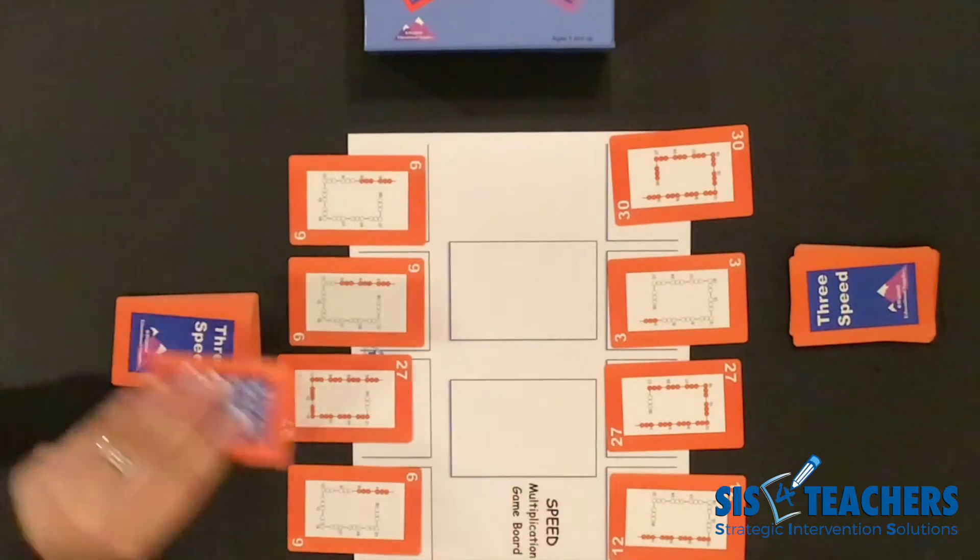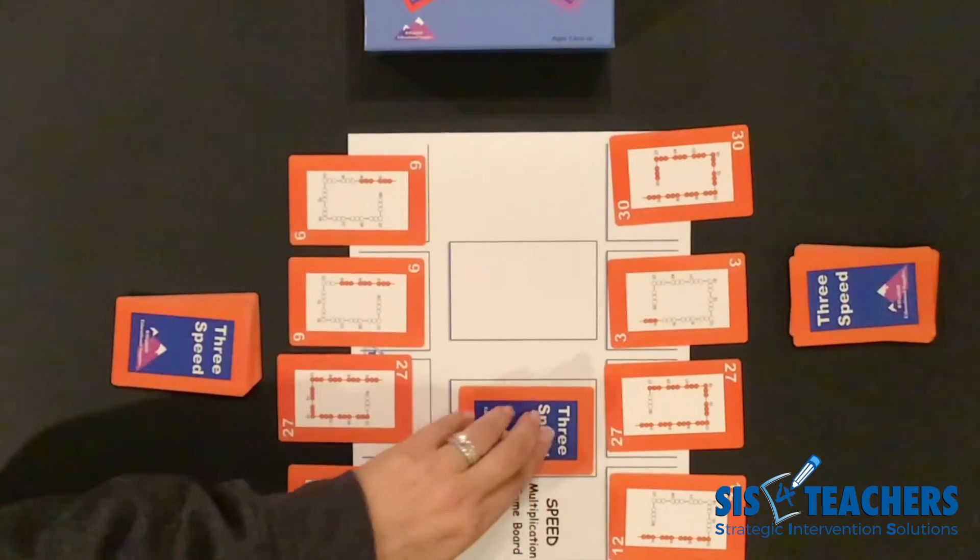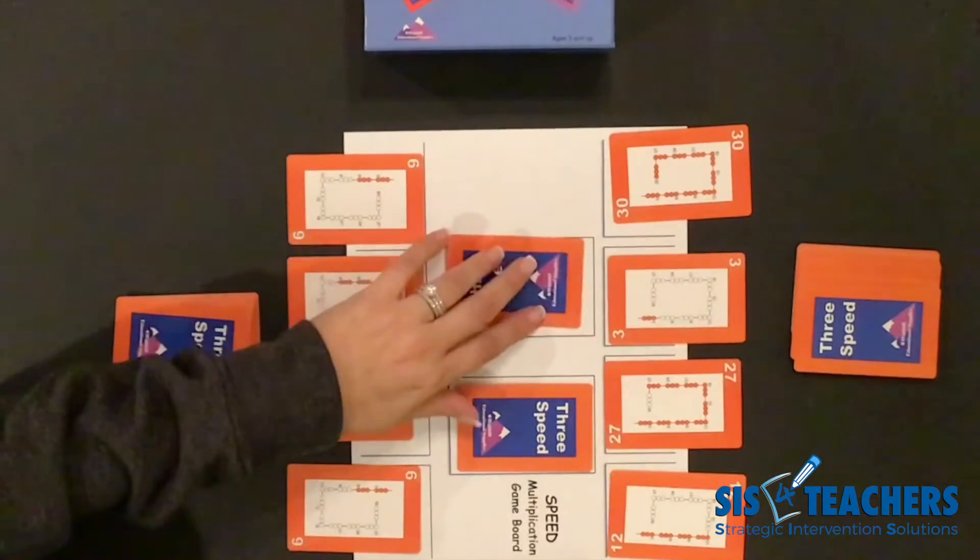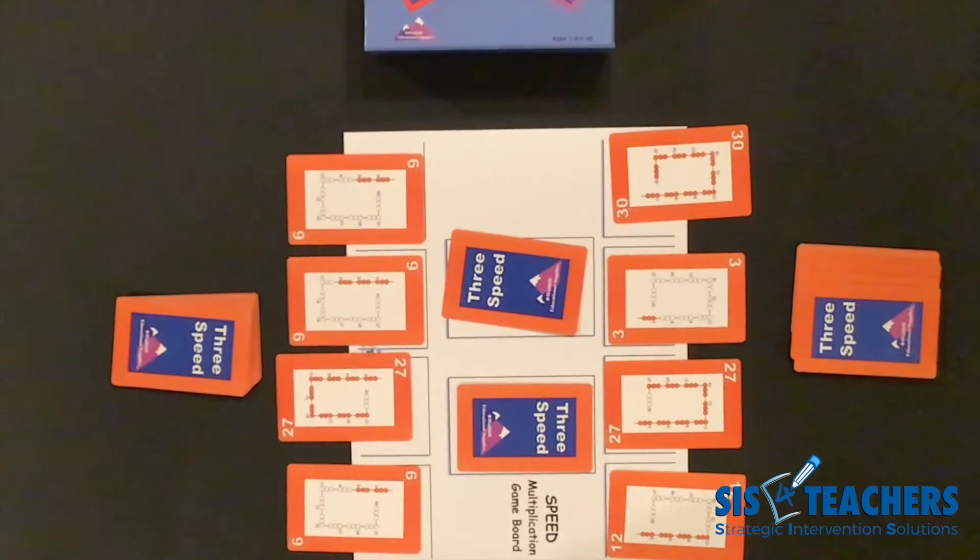We're each going to put one card going down in the center part of the deck so that we can put these down to flip over. We're going to try to speed up or down by three.